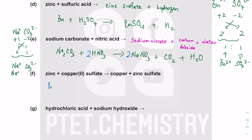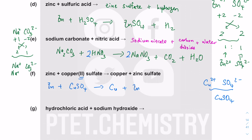The next example: zinc plus copper sulfate. Copper forms Cu2+ and sulfate is SO42−; the charges balance in a 1-to-1 ratio, so CuSO4. The equation Zn + CuSO4 → ZnSO4 + Cu: there is 1 sulfate unit on each side, 1 zinc on each side, and 1 copper on each side. This equation is already nicely balanced.